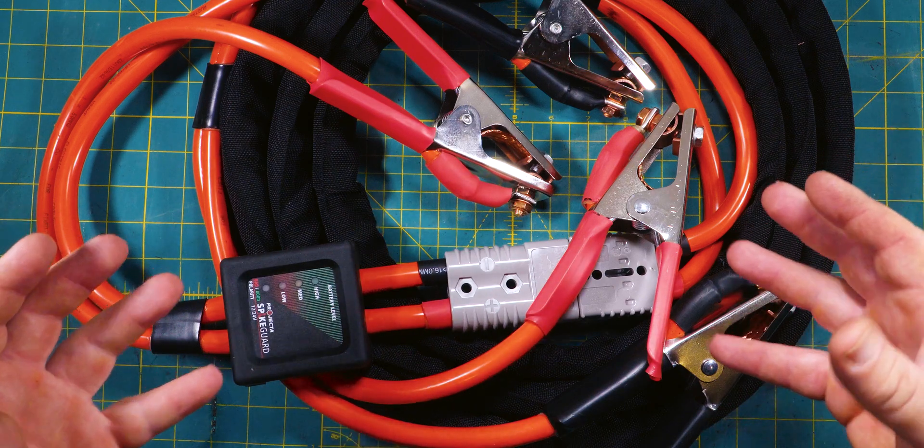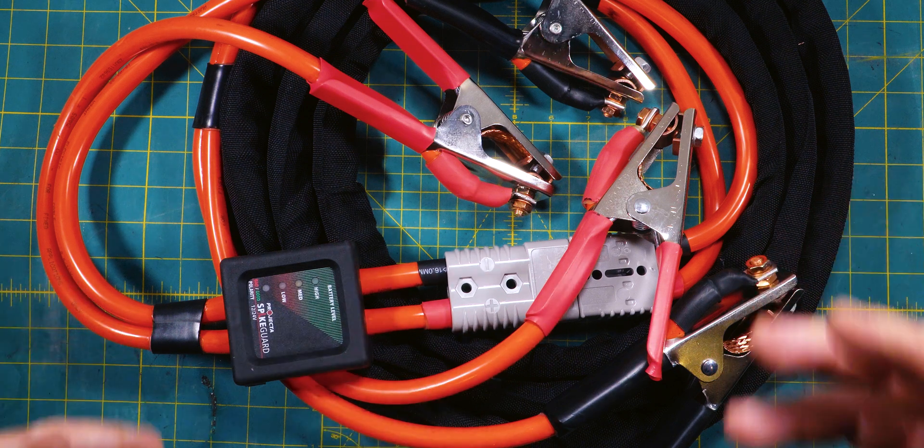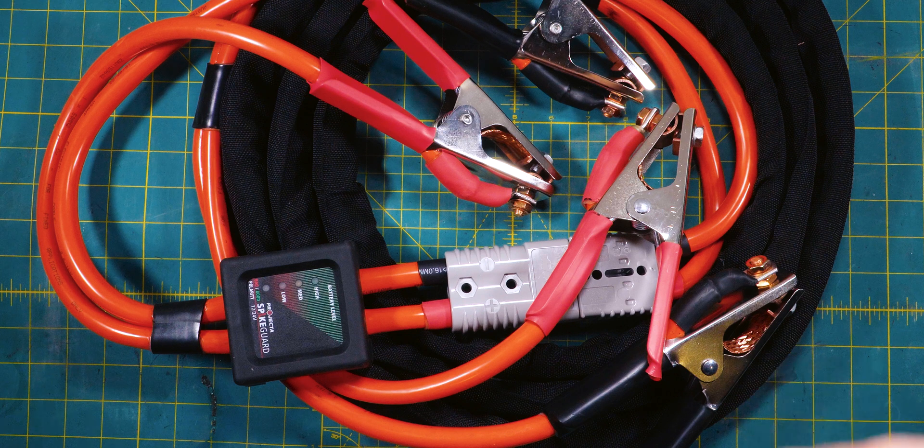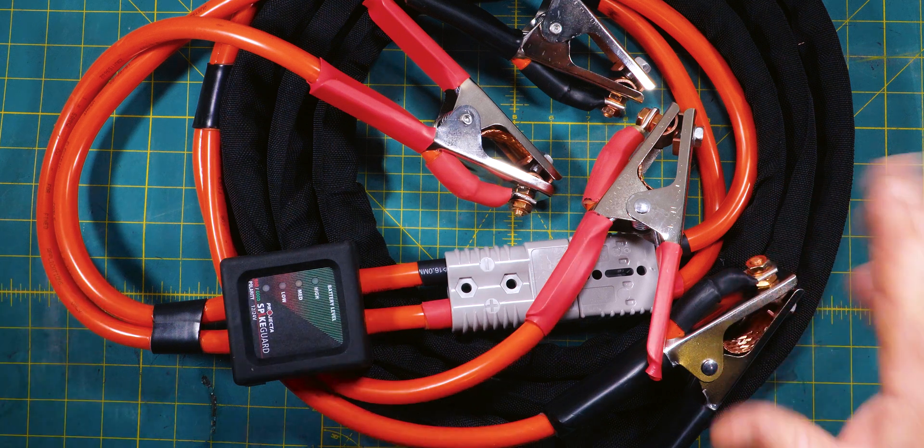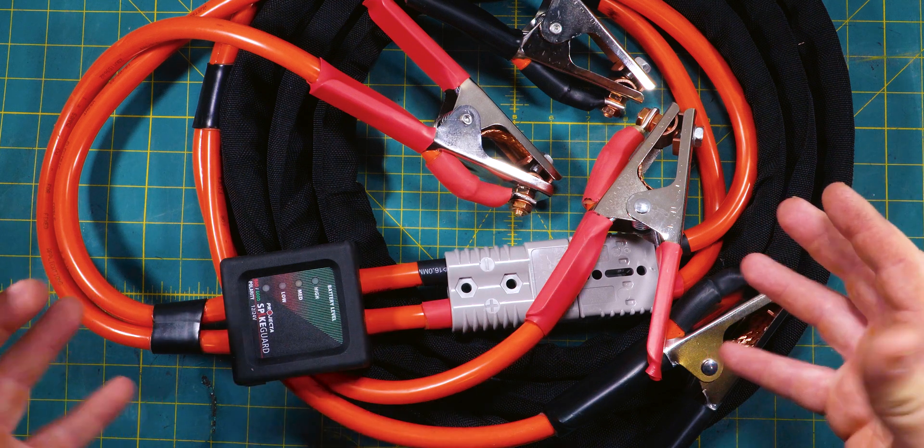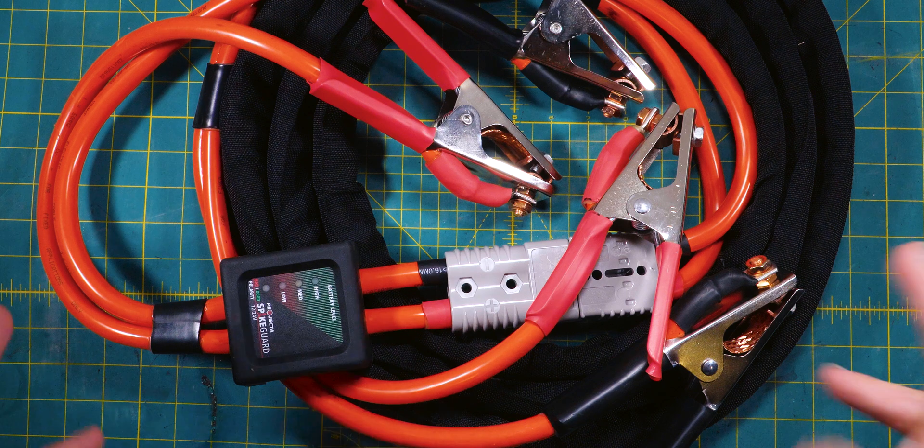G'day Cobbers, welcome back to the bush. In this episode of Lock Alps 4WD, we're going to put together a set of very heavy-duty jumper leads suitable for the most sophisticated 4WD using nothing but hand tools. Stick around to the end of the video because we'll show you how this can be used for jump starting a car and welding, and how to protect your electronics. Let's get into it.